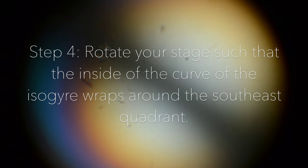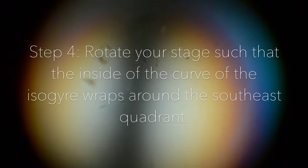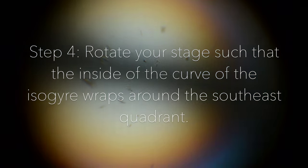Step 4. Rotate your stage such that the inside of the curve of the isogyre wraps around the southeast quadrant.